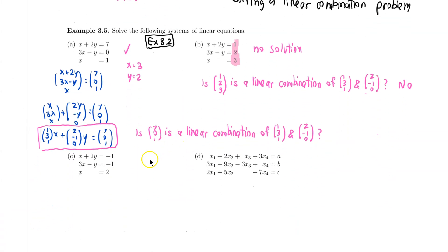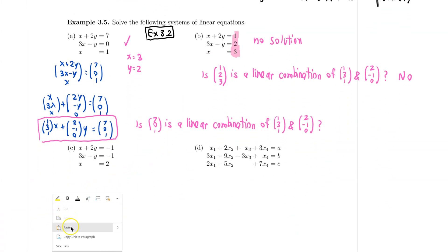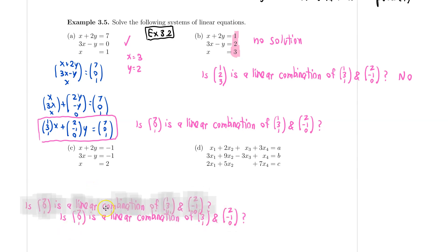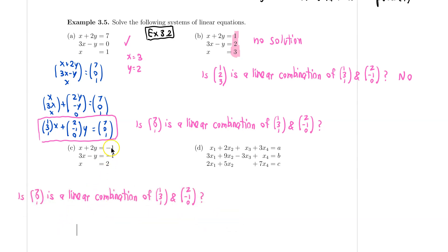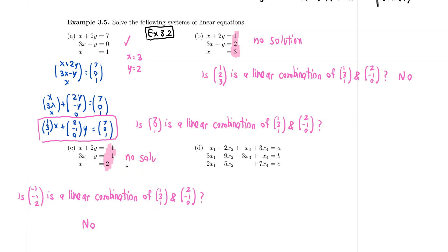For the next one, this is the same as asking if the vector on the right-hand side, (−1, −1, 2), is a linear combination of the other two vectors. We have seen in the last example that this is not a linear combination of the two vectors. So there will be no solution to this system.